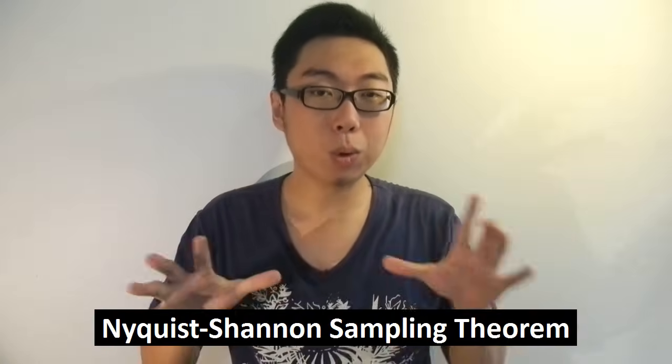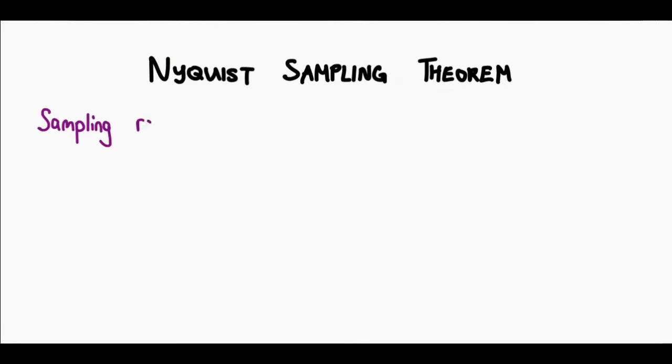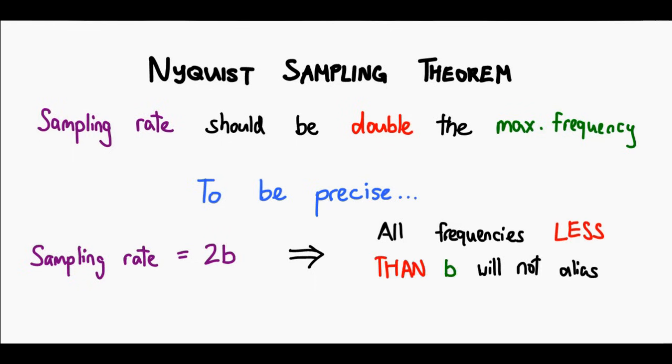So what we're going to do now is move on to the next important concept: how do we avoid aliasing? I'm going to quite grossly oversimplify this concept, but hopefully I can still carry through the core meaning behind it. Essentially, the idea behind this theorem is: if there is a maximum frequency that I want to hear — that is a maximum frequency that I don't want to get aliased and destroyed — this theorem tells us what sampling frequency we should use to guarantee that. The Nyquist theorem simply says this: the sampling rate should be double that of the maximum frequency you want to represent without aliasing. To be very exact, if your sampling rate is 2b, then all frequencies less than b will not be aliased.